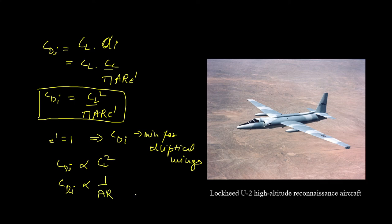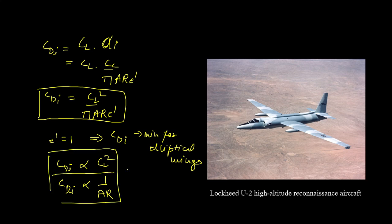So if we have a wing with a larger aspect ratio, C_Di will be reduced. One such example is the Lockheed U-2 aircraft, shown in the figure, which has a very high aspect ratio — a very long wing. A higher aspect ratio wing greatly reduces induced drag.